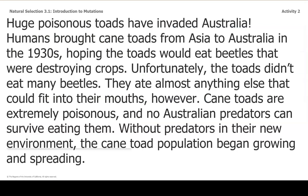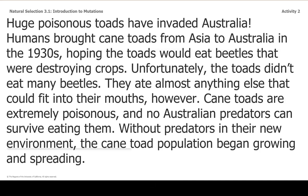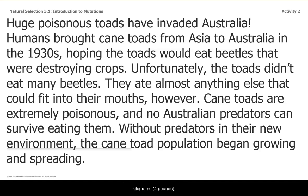Huge poisonous toads have invaded Australia. Humans brought cane toads from Asia to Australia in the 1930s, hoping the toads would eat beetles that were destroying crops. Unfortunately, the toads didn't eat many beetles — they ate almost anything else that could fit into their mouths. The big toads grow up to 22 centimeters (9 inches) long and weigh up to 1.8 kilograms (4 pounds). Cane toads are extremely poisonous and no Australian predators can survive eating them. Without predators in their new environment, the cane toad population began growing and spreading.